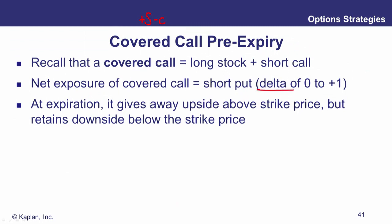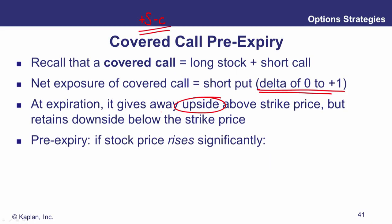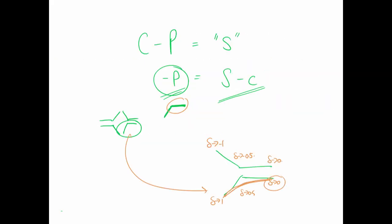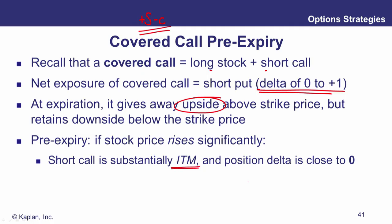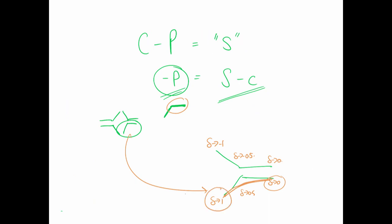The covered call gives away upside — you get called away above the call strike. Pre-expiry, if the stock price goes up significantly, the short call goes in the money, its delta expands and negates the delta of the long stock position, leaving us with zero delta. If the underlying falls, the call option moves out of the money and the position delta moves close to plus one.